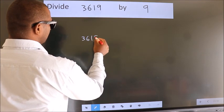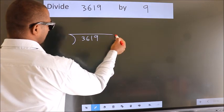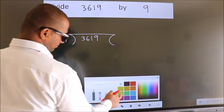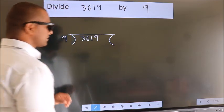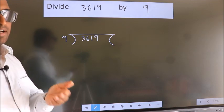3619 here, 9 here. This is your step 1. Next.